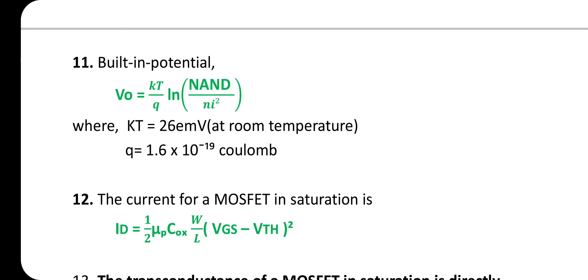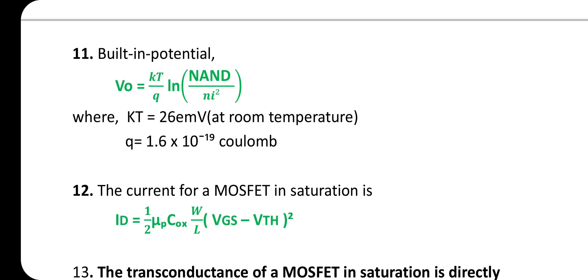The equation for built-in potential: V₀ = (kT/q) × ln(N_A × N_D / n_i²), where kT = 26 meV at room temperature and q = 1.6 × 10⁻¹⁹ coulombs. The remaining terms N_A, N_D, and n_i will be given in the question.